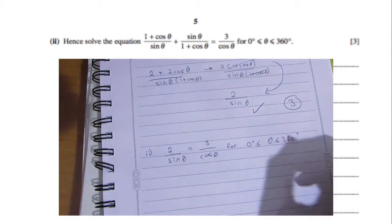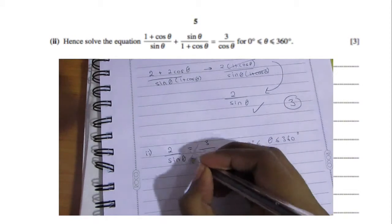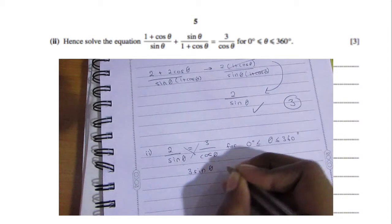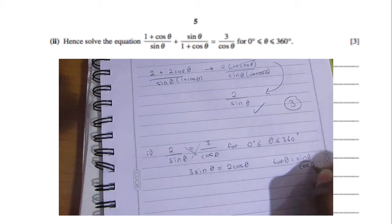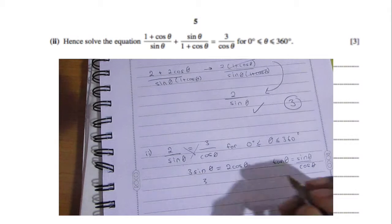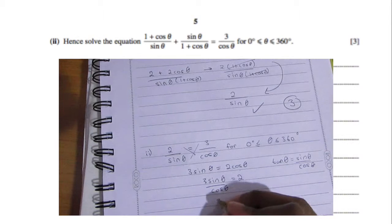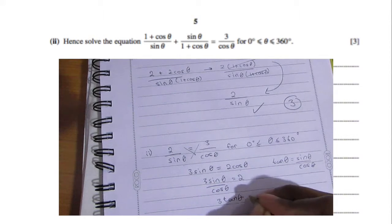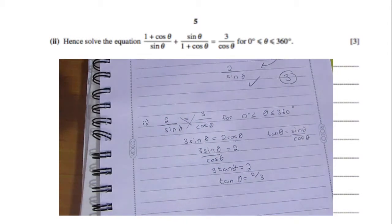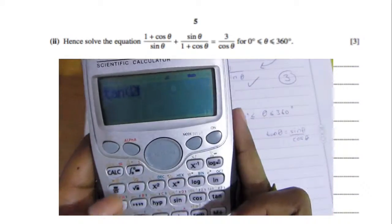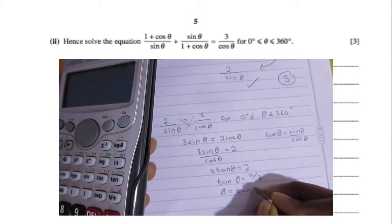Part ii: hence solve (the original expression) = 3/cosθ for 0° ≤ θ ≤ 360°. Since we proved the left side equals 2/sinθ, we have 2/sinθ = 3/cosθ. Cross-multiplying: 2cosθ = 3sinθ, so 3sinθ/cosθ = 2, meaning 3tanθ = 2. Therefore tanθ = 2/3.